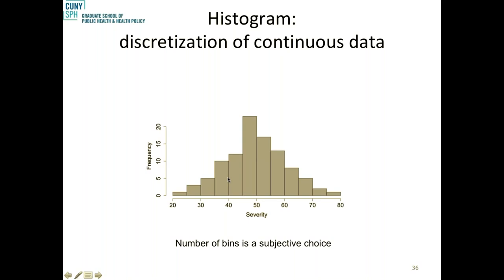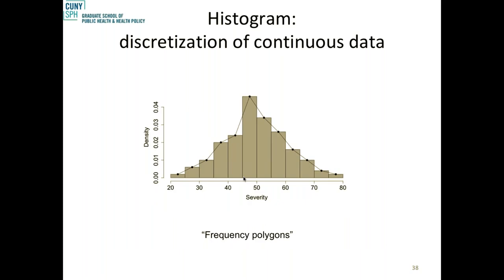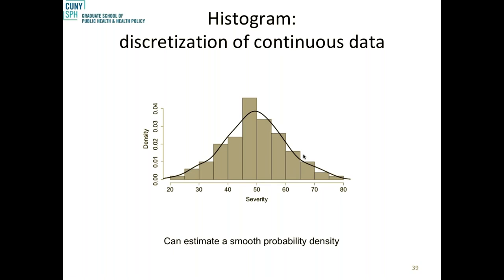A frequency polygon is another display method — you pick the middle value of each bar, make the bars disappear, and you have a summary of where the midpoints for each bar are. If you smooth out this curve, you get a probability density distribution. There's also another way of displaying this data called a box plot.